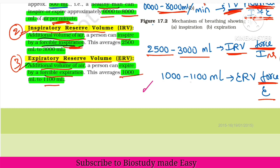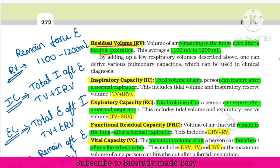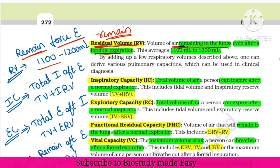ERV is around 1000 to 1100 ml — that is how much we can breathe out by forceful expiration. Next, residual volume — even after forceful expiration, there will be air remaining in your lungs. That remaining volume is the residual volume, which is around 1100 to 1200 ml.